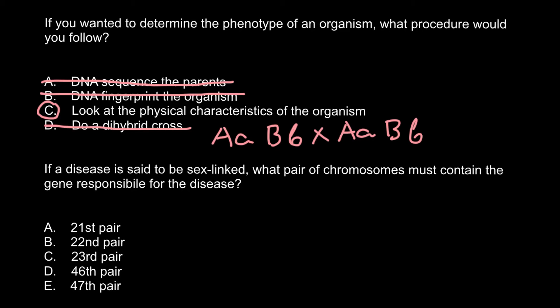If a disease is said to be sex-linked, what pair of chromosomes must contain the gene responsible for the disease? There are five answers to choose from. As you know, humans have 46 chromosomes arranged in 23 pairs. In a karyotype, chromosomes are arranged according to their size and position of the centromere, and the 23rd pair is the pair of sex chromosomes.